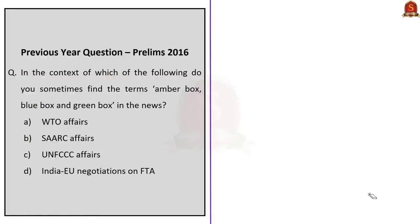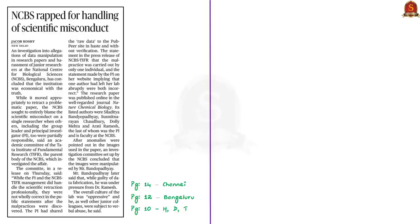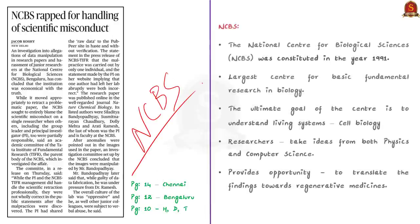Now look at this news article regarding NCBS — the National Center for Biological Sciences. The center is located in Bengaluru and recently it is under multiple allegations regarding data manipulation in their publications. Many experts believe that NCBS has manipulated data in their publications. This is why this organization is mentioned in the news. Organization mentioned in the news is very important from prelims perspective.